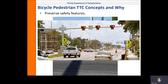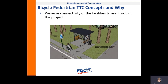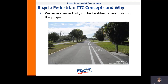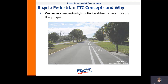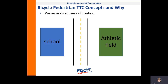They all increase pedestrian safety and should be preserved during construction to the greatest extent feasible. The next concept is to preserve connectivity of the facilities to and through the project — for example, keeping the sidewalk connected to the transit landing pad or keeping a bike lane connected to a trail. The next concept is to preserve directness of routes. For example, if we know many pedestrians are crossing from a school to an athletic field across the road, then when construction begins, find a detour that will get them back and forth as directly as possible while staying outside of the work zone area.